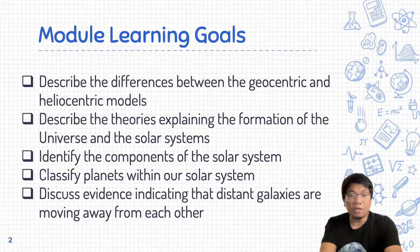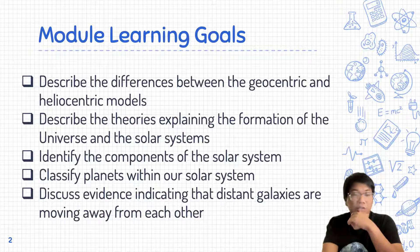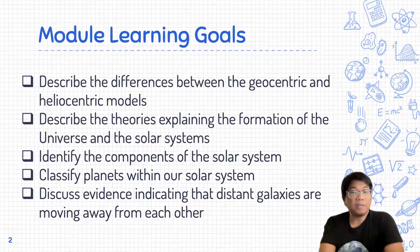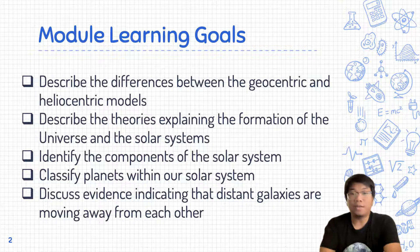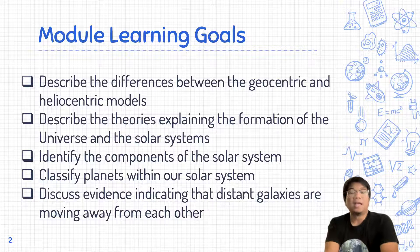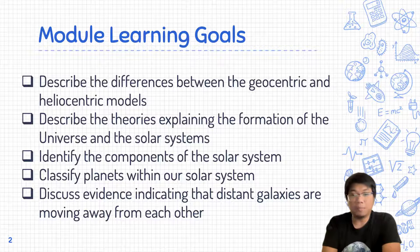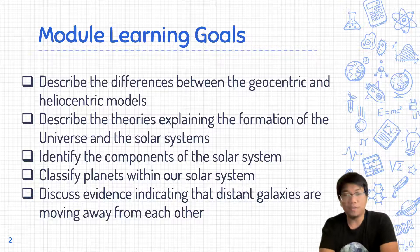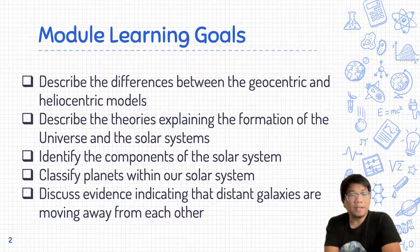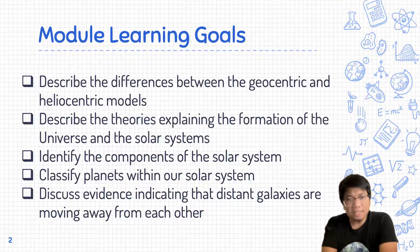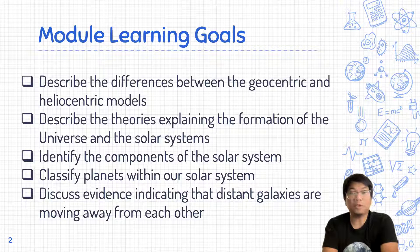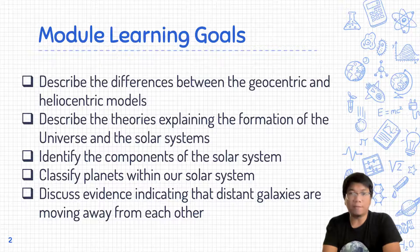The lesson goals of this module include the following items. By the end of this module, you should be able to: first, describe the differences between the geocentric and heliocentric models; second, describe theories explaining the formation of the universe, the solar system, and the Earth; third, identify the components of the solar system and classify planets within it; and last, discuss evidence indicating that distant galaxies are moving away from each other.